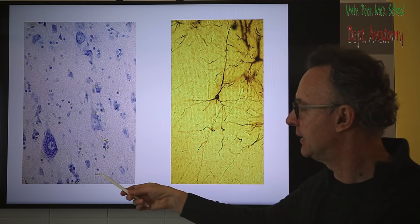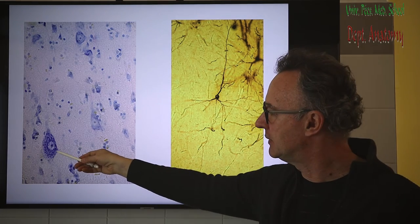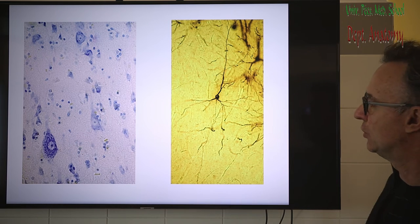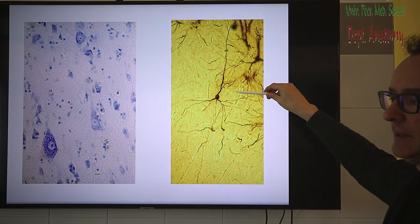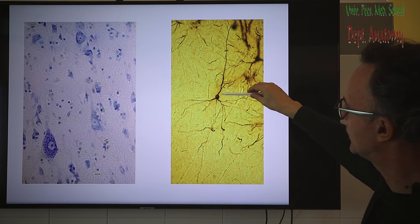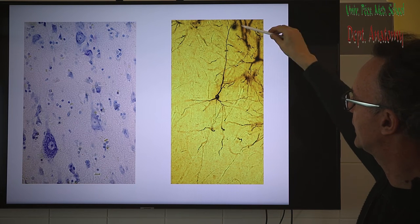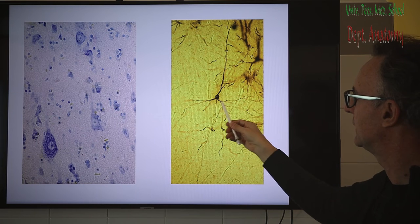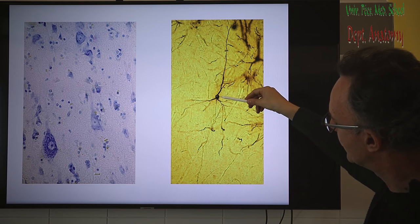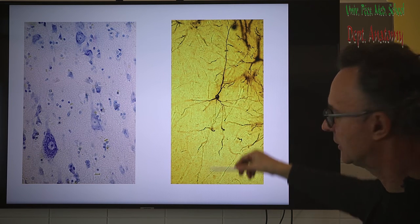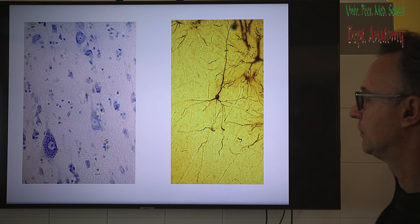With Nissl staining we see the Nissl granulation — the rough endoplasmic reticulum in the cytoplasm, the perikaryon, and the beginning of the dendrites. With Golgi staining we see the cell body and processes. The pyramidal cell has two types of dendrites: one apical dendrite ascending to the first layer, and basal dendrites ramifying at the level of the cell body. There is also a thinner process, the axon, which may terminate in the cortex as association and commissural pathways, or forms descending projection pathways.